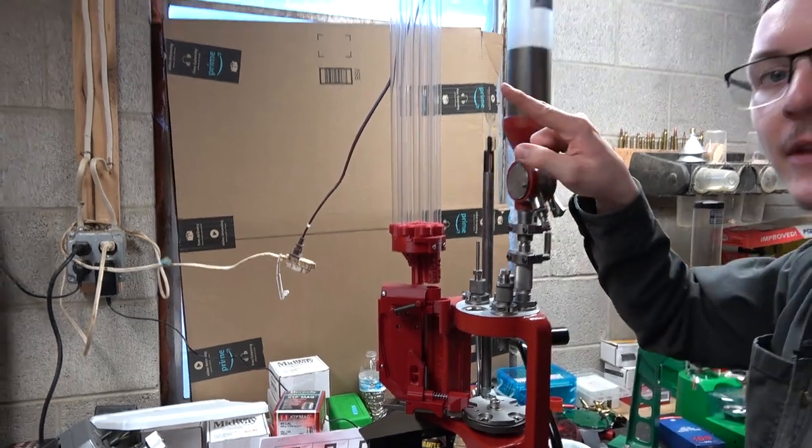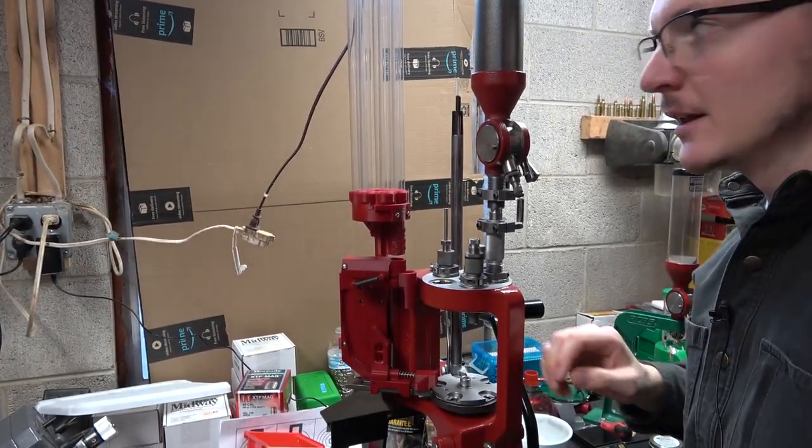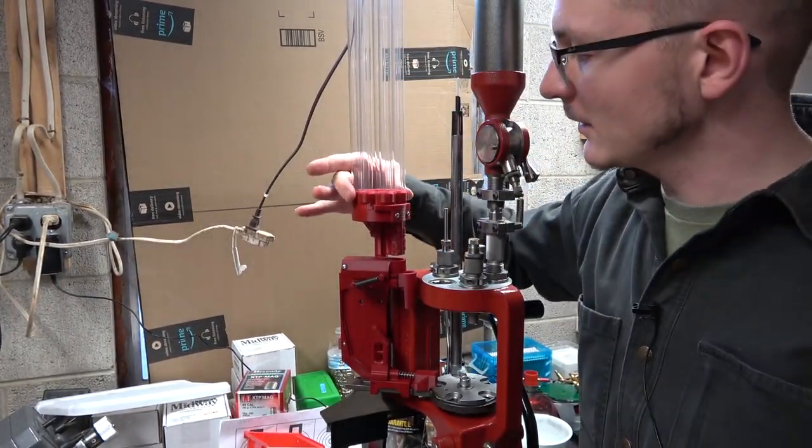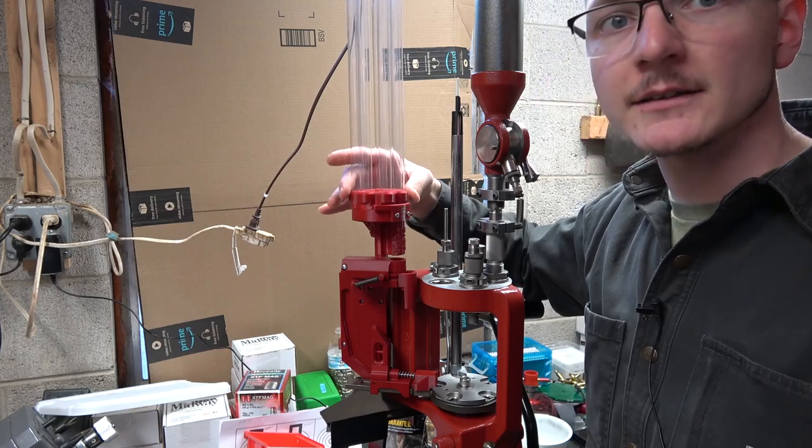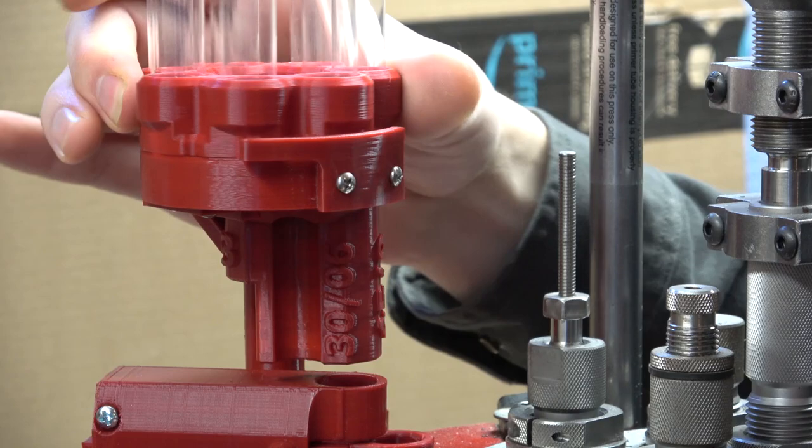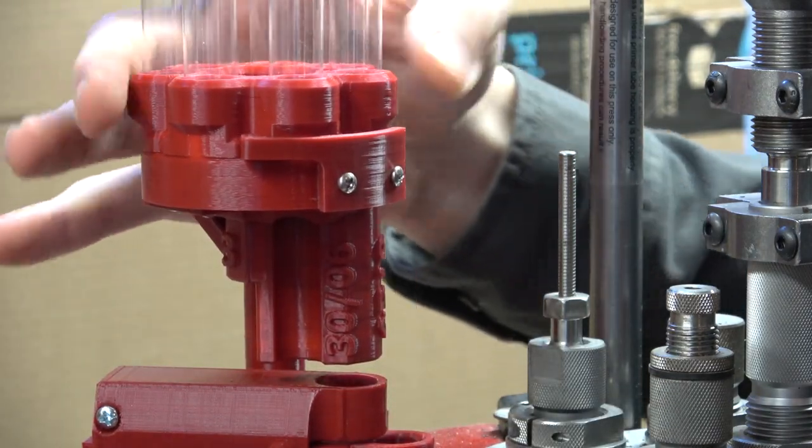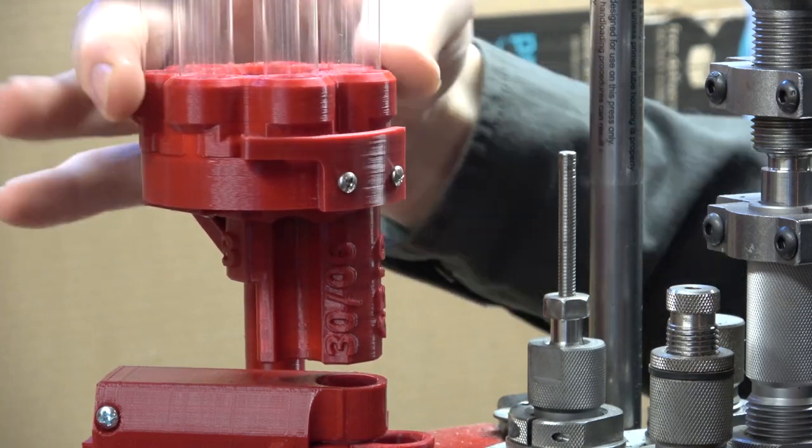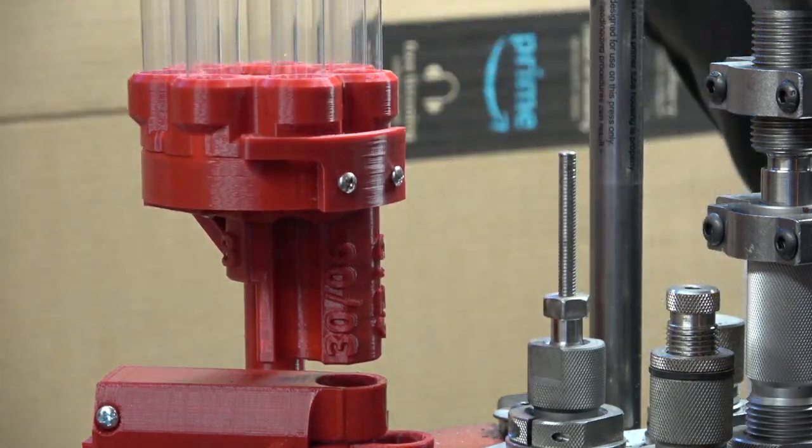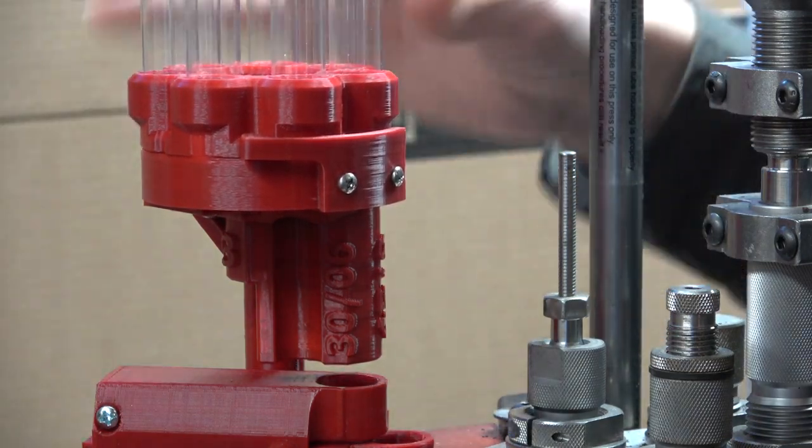So as I said, you've got the collator bowl at the top, the tubes running down into this indexing system here. Let me give you a real close look at that. It's got this tab that holds it in the right spot and it's just kind of a good spot to index off of. And you can rotate this to drop cases through whichever tube has cases in it.